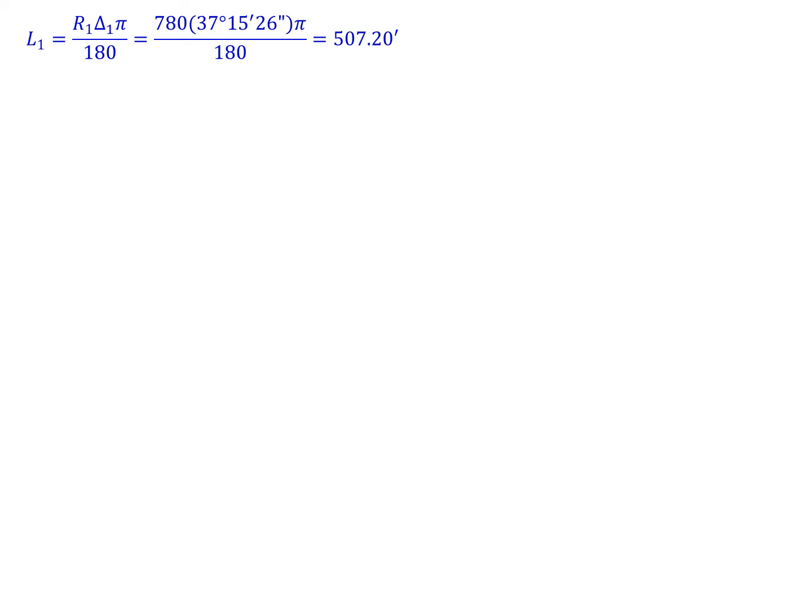It's important to realize L1 is actually the second curve you encounter because the subscript 1 goes with the larger radius curve. For L2, same calculation but with radius 550 and delta 2, giving us 261.51 feet.